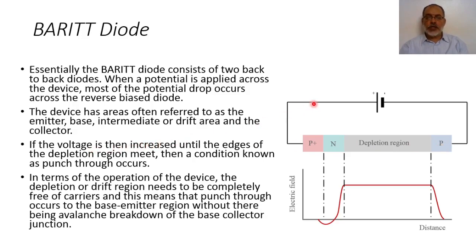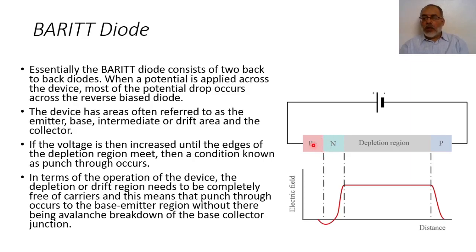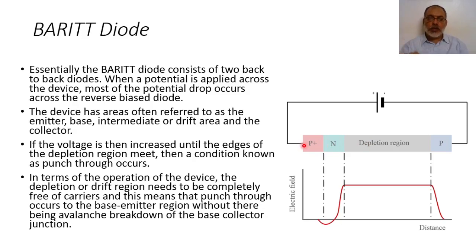If the voltage is increased until the edges of the depletion region meet, this condition is known as punch-through. If the depletion region has increased until it reaches the depletion region of the forward biased PN junction, then the holes going from the P+ will go through the depletion region, and the electrons will move towards the positive side. So, if the voltage is increased until the end of this depletion region and the other depletion region meet, the condition is known as punch-through.